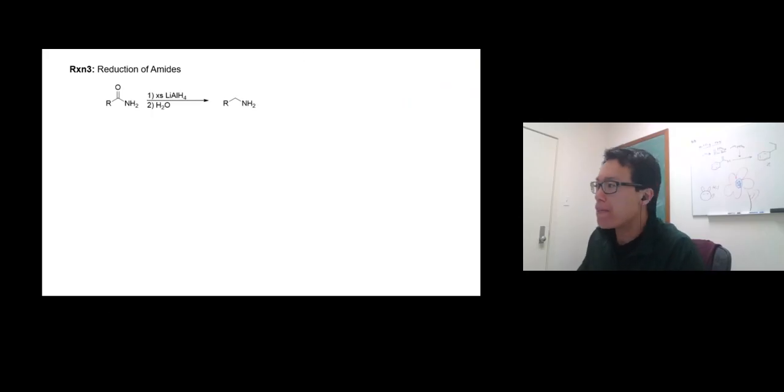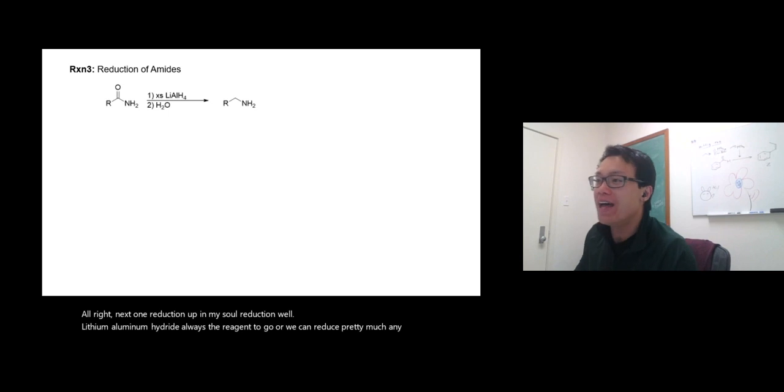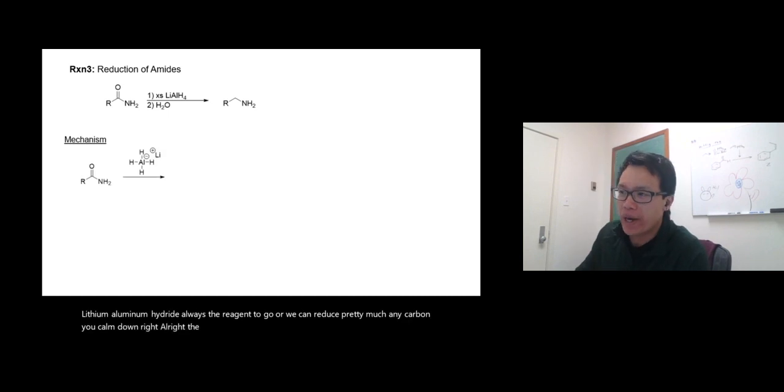Next one: reduction of amides. For reduction, lithium aluminum hydride is always the reagent to go to - we can reduce pretty much any carbonyl compound. The mechanism is kind of weird.